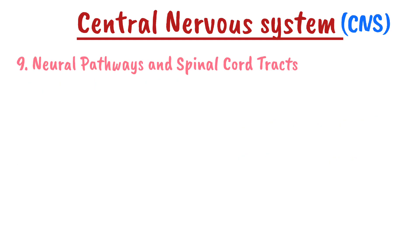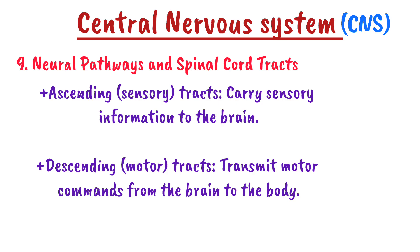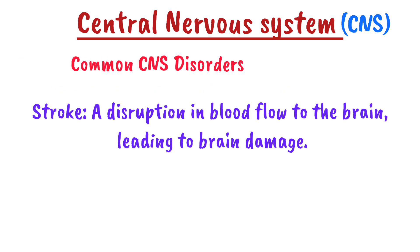Number nine is the neural pathways and spinal cord tracts. The neural pathways connect different parts of the CNS and are classified into two types: the ascending, or sensory tract, and the descending, or motor tract. The ascending tract carries information from the body to the brain, while the descending motor tract transmits motor commands from the brain to the body.